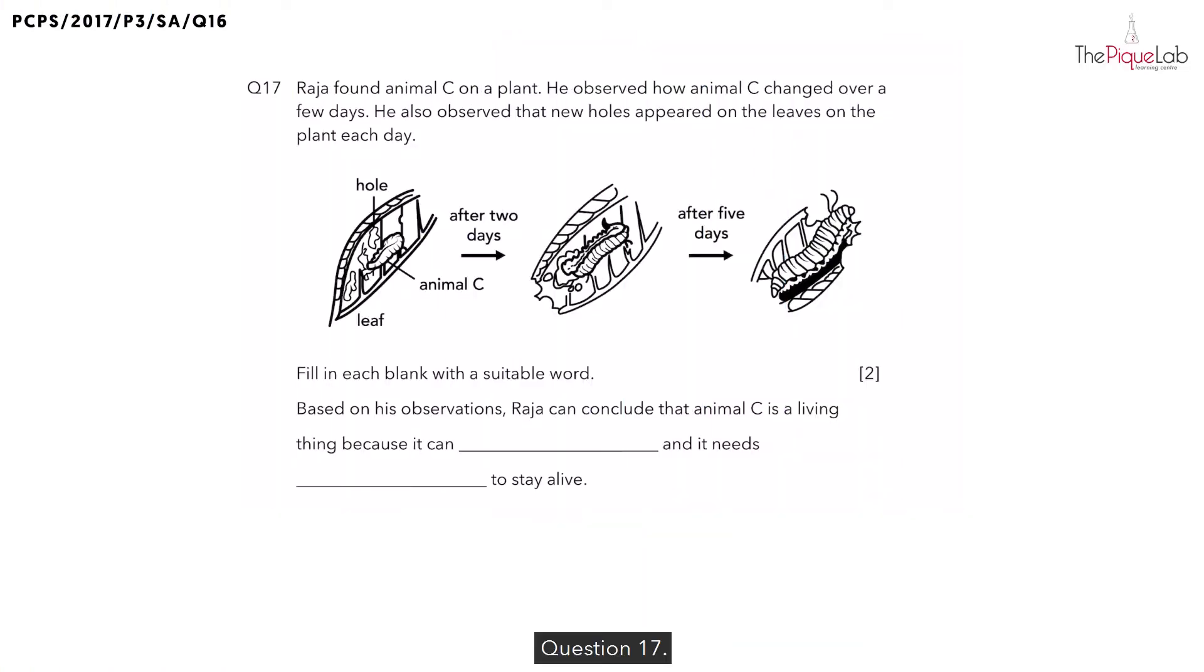Question 17. Raja found animal C on a plant. He observed how animal C changed over a few days. Let's take a look at animal C below.